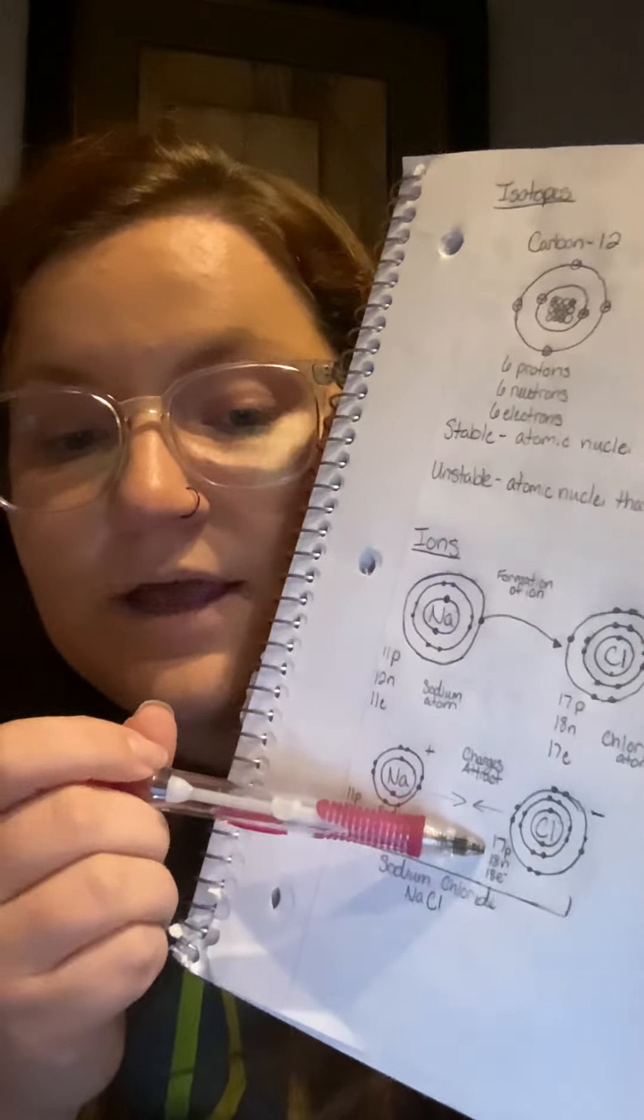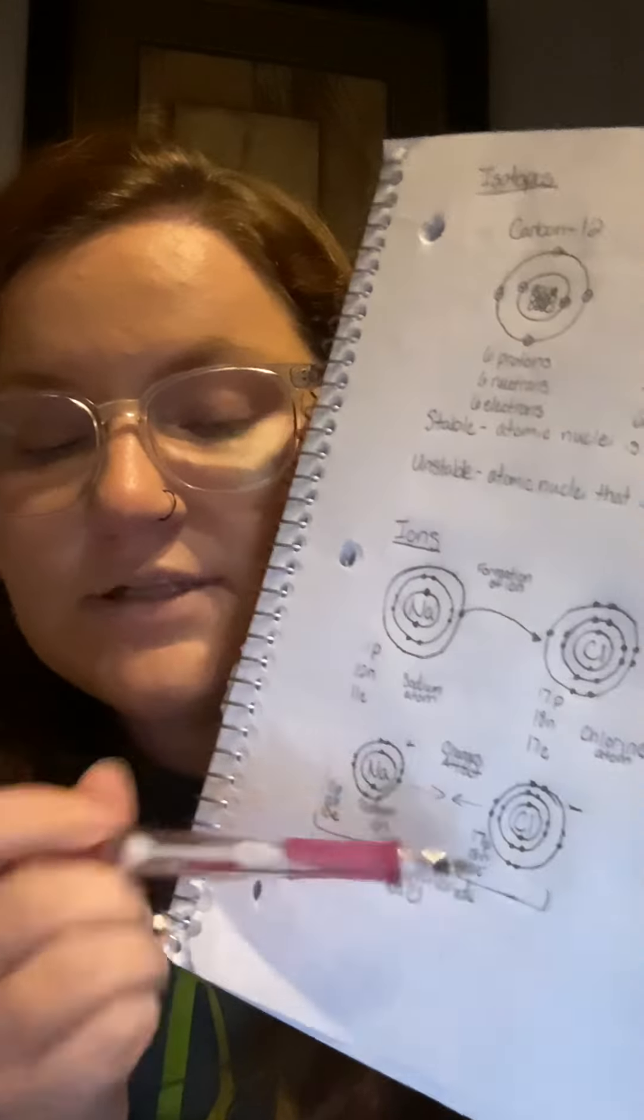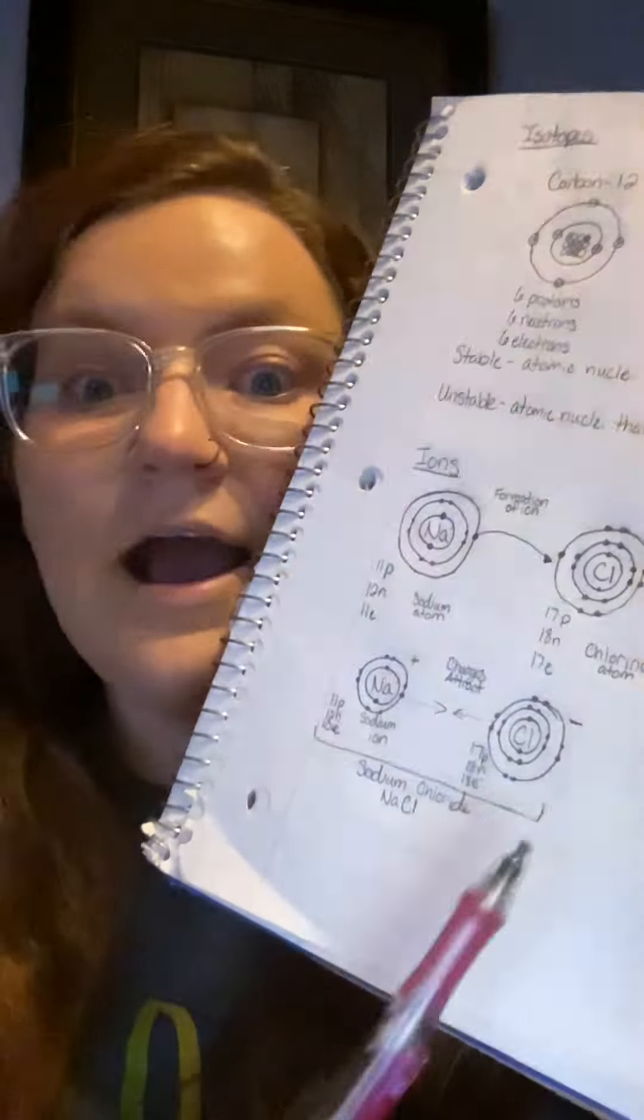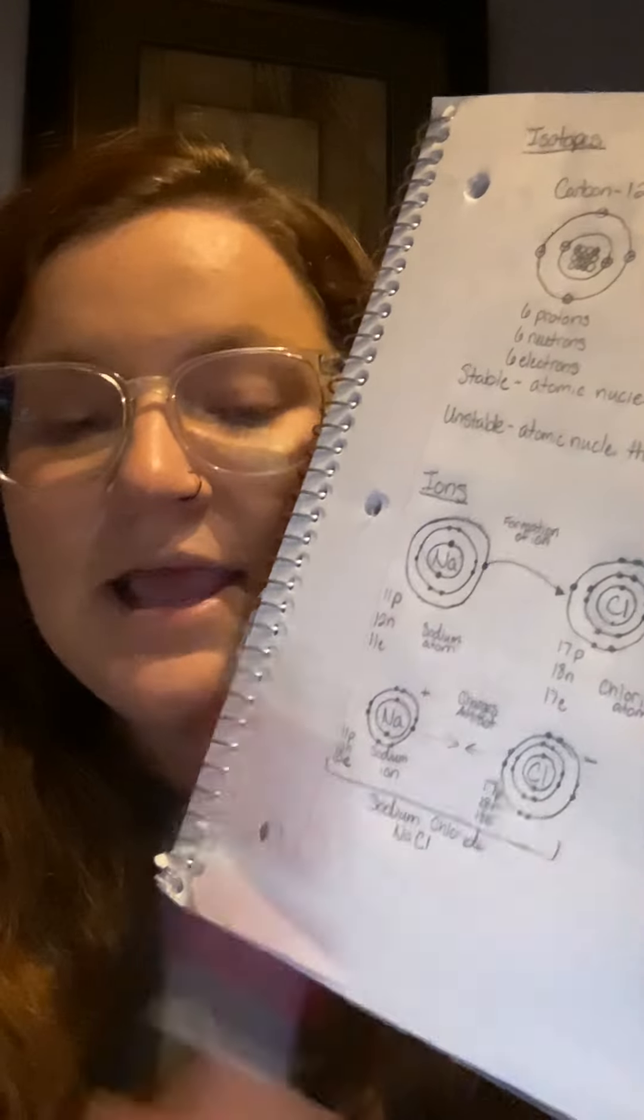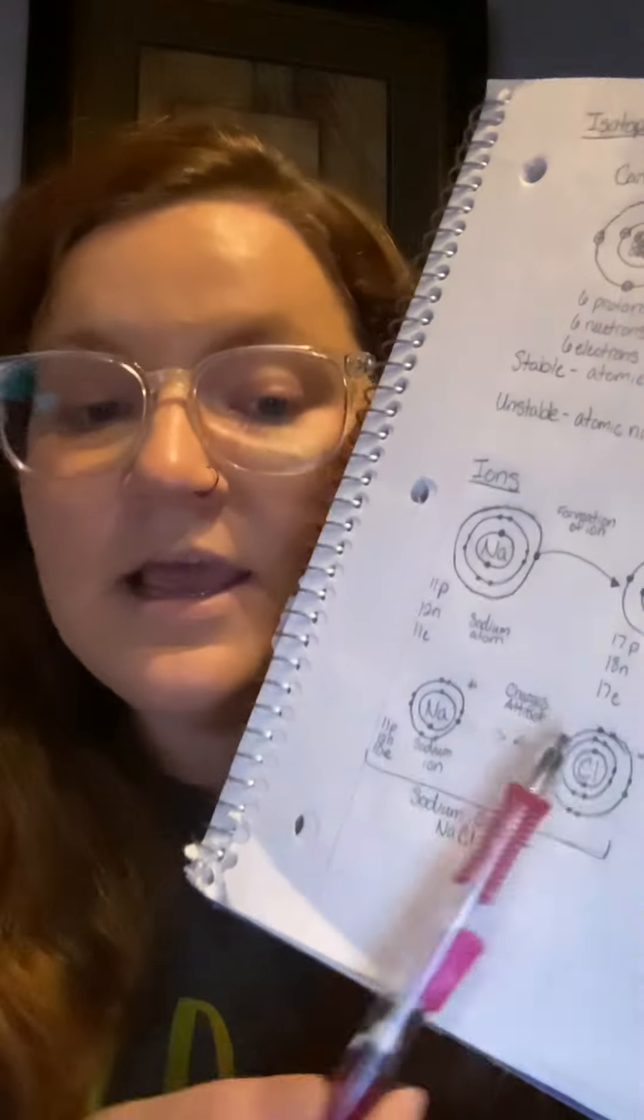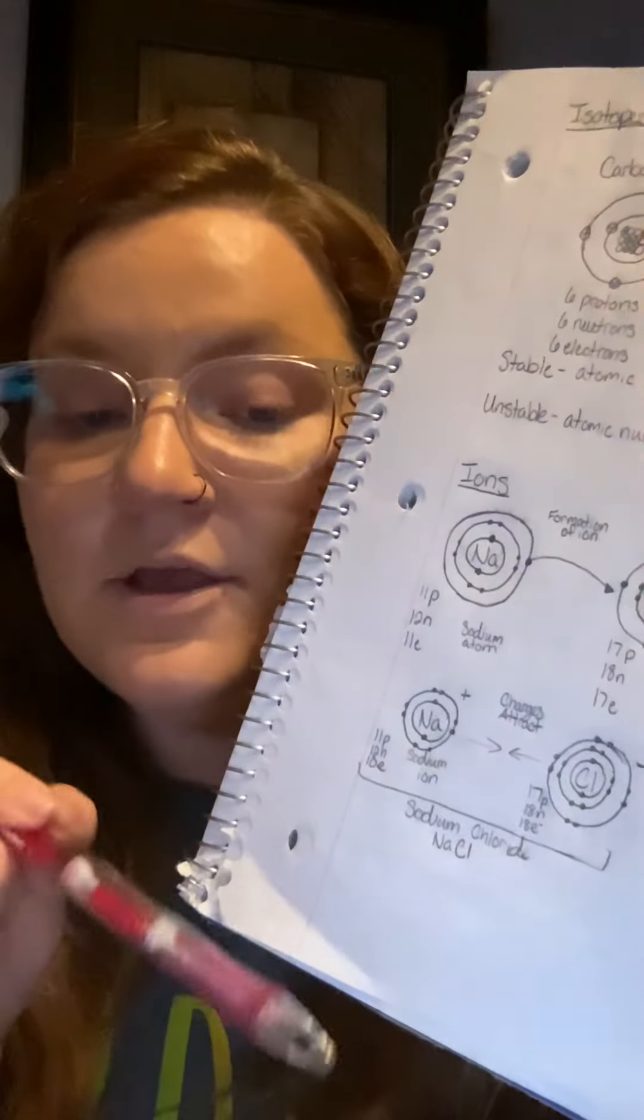So now they're at 17 protons, 18 neutrons, and 18 electrons. That atom or that ion now becomes negatively charged. And now that we have a positive and negative charge, these ions attract to each other forming sodium chloride.